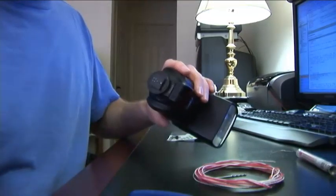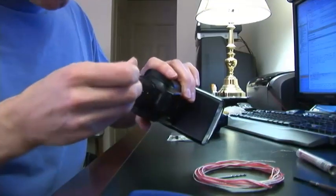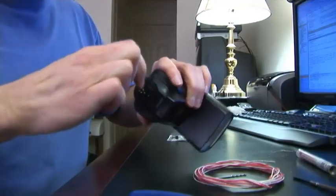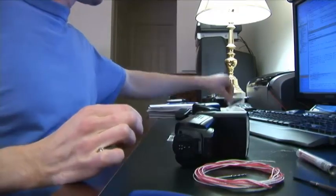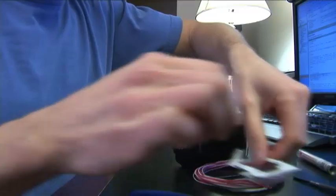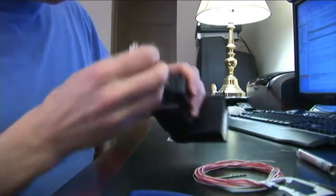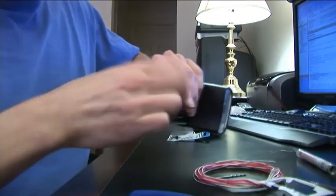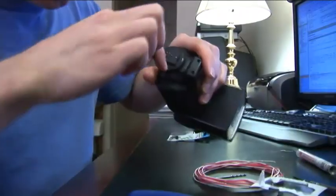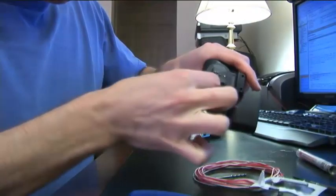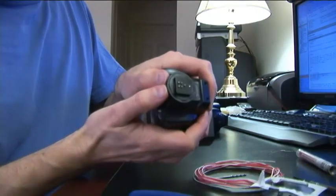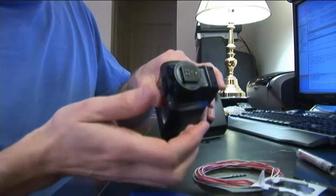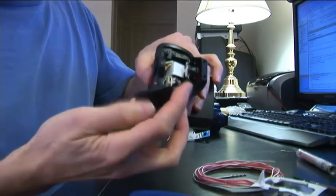First step we're going to unscrew the bottom. There's four screws and they're tiny too so you might want to have a little tray to keep them in. And by removing those four screws now we can pop off the hot shoe bottom here now.